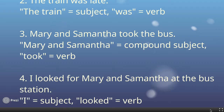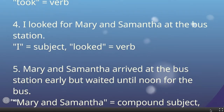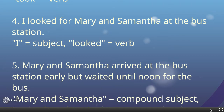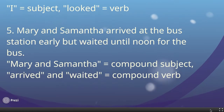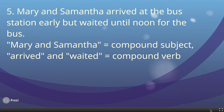One real subject — the two of them — one verb — took the bus. Number four: I looked for Mary and Samantha at the bus station. The subject is I, and the fact that you have 'at the bus station' — it's still a simple sentence. Number five: Mary and Samantha arrived at the bus station early, but waited until noon for the bus. This is still a simple sentence — not compound, not complex. You do have a compound subject and a compound verb — arrived and waited — but both go back to Mary and Samantha. It's still a simple sentence.